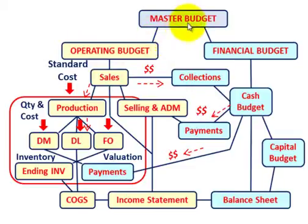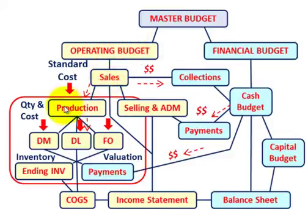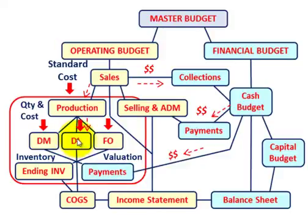So what the company has done here — they're going to have some master budgeted amount, and then under their master budget they're going to have an operating budget, and then underneath that a sales budget. Then we get down to our production budget. This is where our standard costing comes into effect. Under the production operation, they're going to be keeping track of the direct materials, the direct labor, and the factory overhead going into the products they're manufacturing.